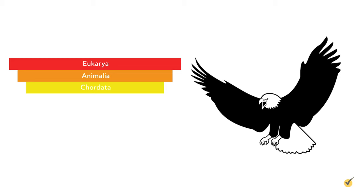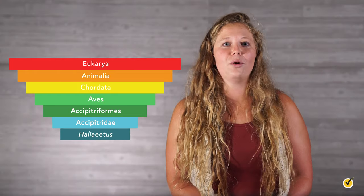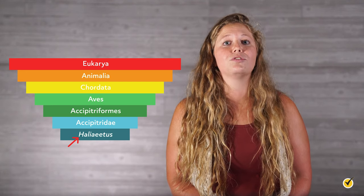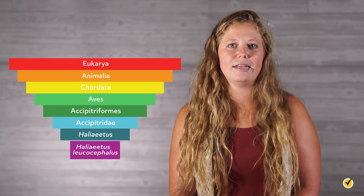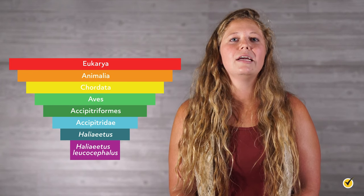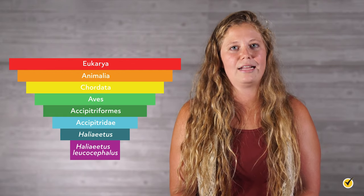There are many subphyla accounting for other features of their build and skeleton, but for simplicity we'll keep our scope to the bigger picture. For class, they are considered to be Aves. The order is Accipitriformes, and the family is Accipitridae. The genus is Haliaeatus — note that the first letter of the genus is always capitalized and the whole word is italicized. This goes for any organism. And finally, at the species level, bald eagles are known as Haliaeatus leucocephalus. The species level is also italicized.